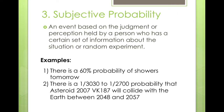Another example would be that there is a 1/3030 to 1/2700 probability that the asteroid 2007 VK187 will collide with Earth between 2048 and 2057. Before you start freaking out, you can calculate the probabilities and they are very, very low. However, the person stating this probability makes it subjective because they have studied it.